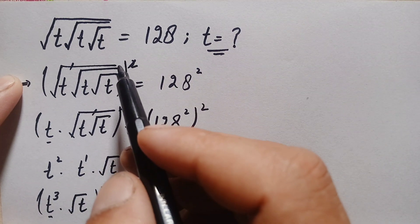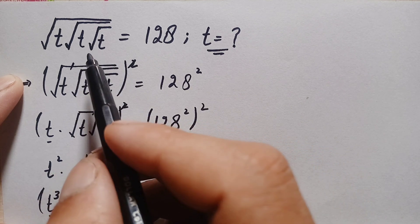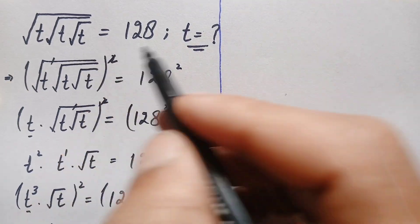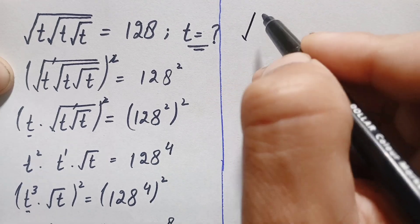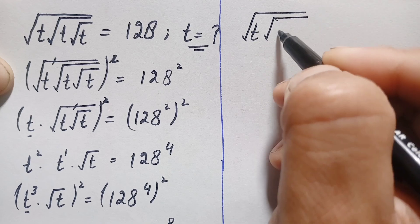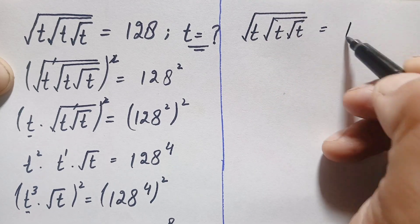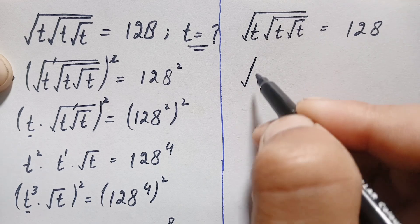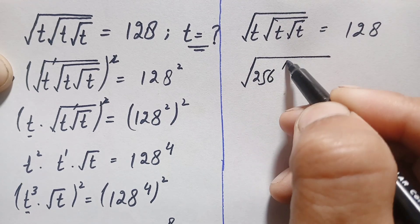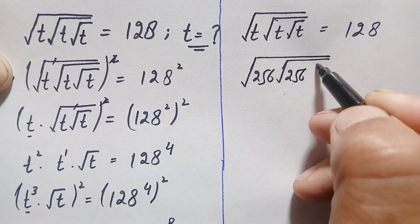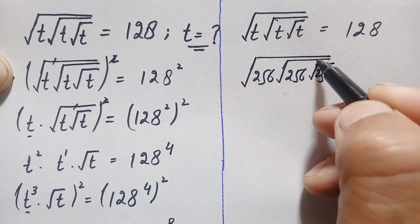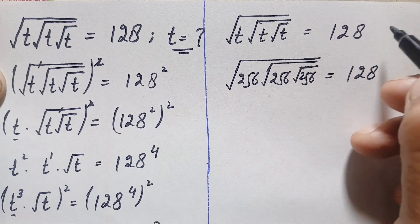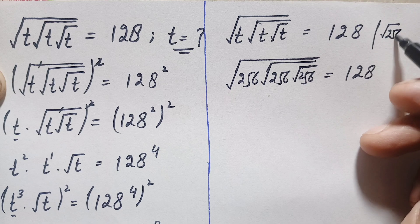So t equals 256 is our answer. Now we will verify that t equals 256 is the exact and correct value of t in this interesting radical math problem. To verify, we substitute t equals 256 back into the original problem: square root of t, times square root of t, times square root of t, is equal to 128.